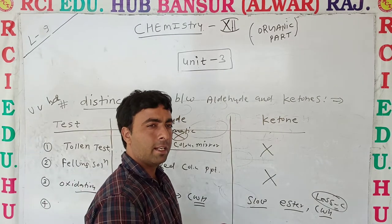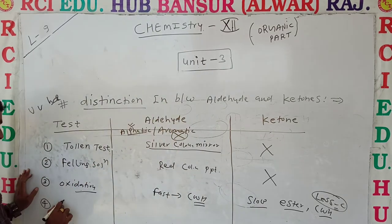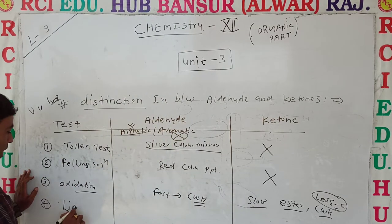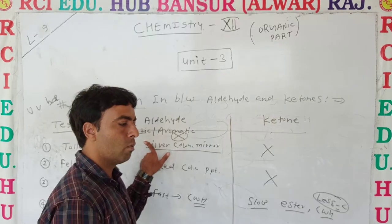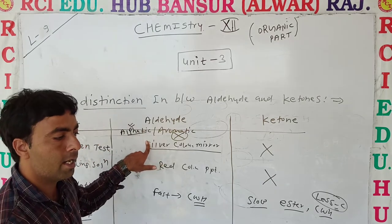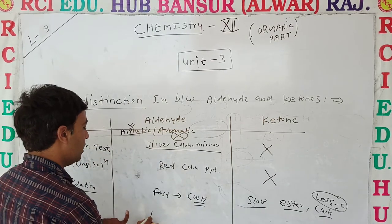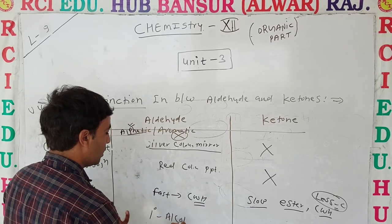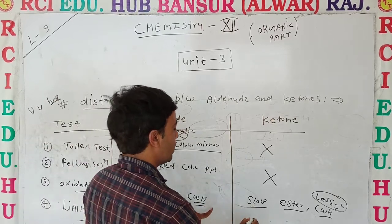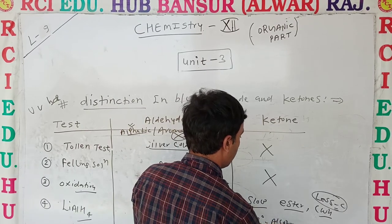Next is lithium aluminum hydride reduction. When we use lithium aluminum hydride, an aldehyde gives a primary alcohol, and a ketone gives a secondary alcohol.